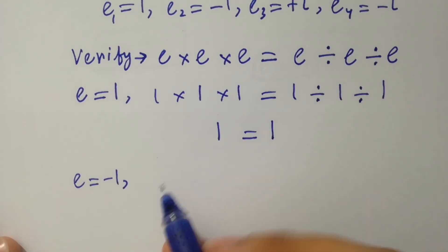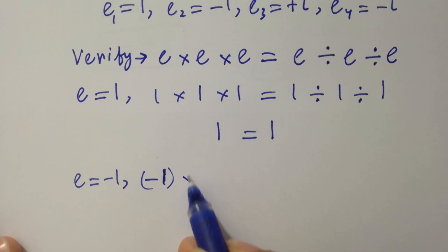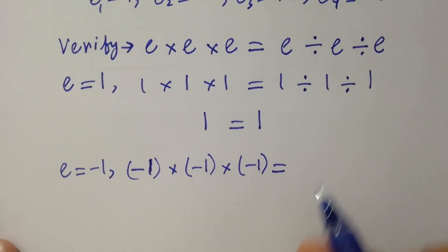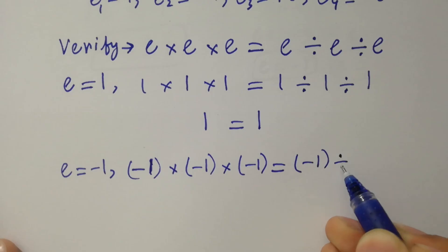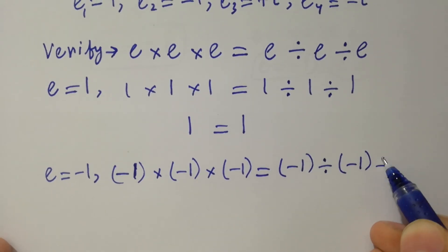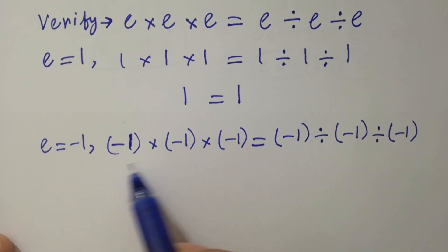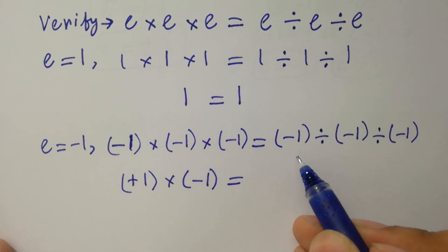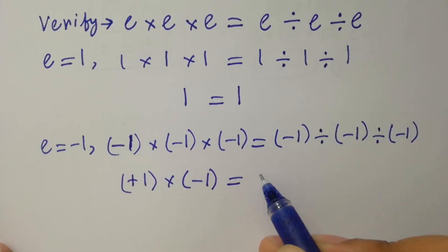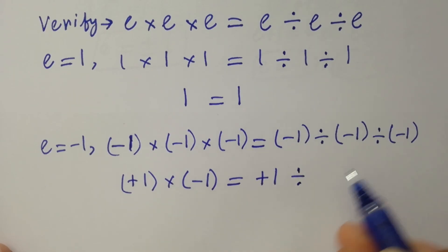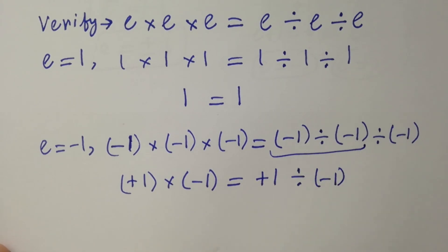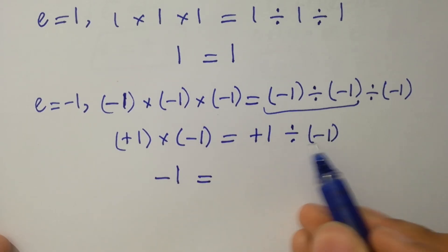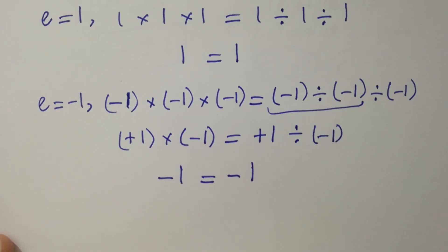Next, take e equals minus 1. Substituting into the equation: minus 1 times minus 1 times minus 1 equals minus 1 divided by minus 1 divided by minus 1. On the left, minus 1 times minus 1 is plus 1, times minus 1 gives minus 1. On the right, minus 1 divided by minus 1 is plus 1, divided by minus 1 gives minus 1. Left hand side equals right hand side.